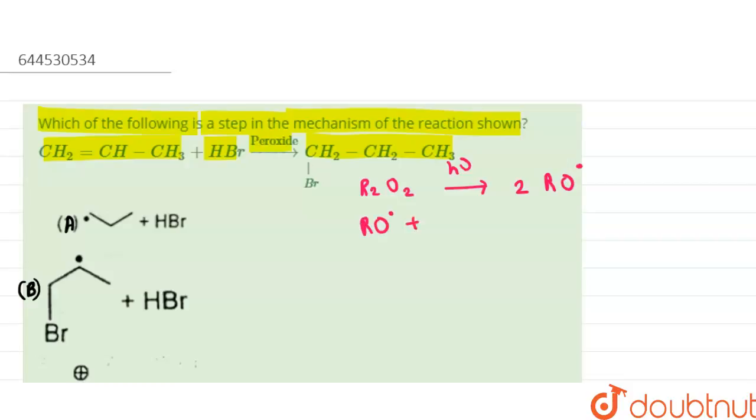This RO radical will react with HBr to simply form ROH and Br radical. These are the reaction initiation steps.